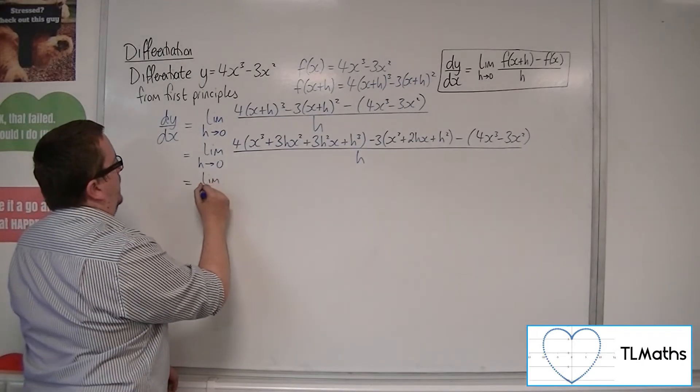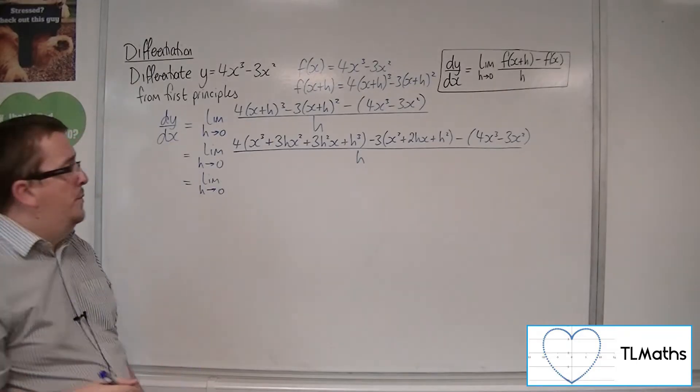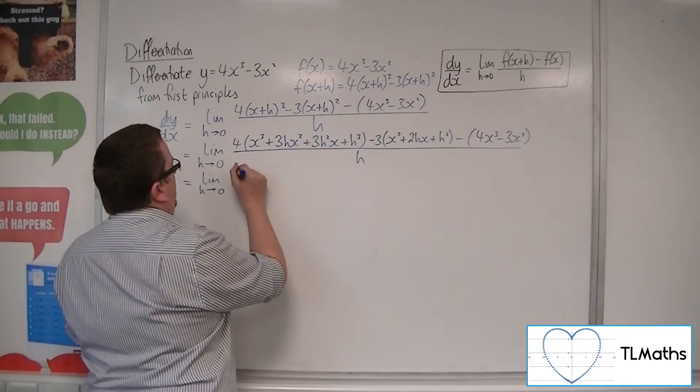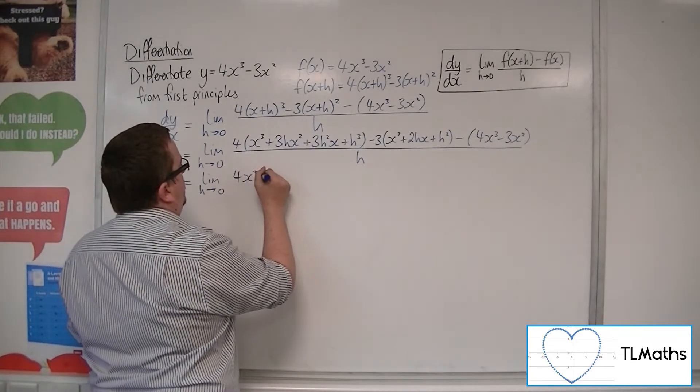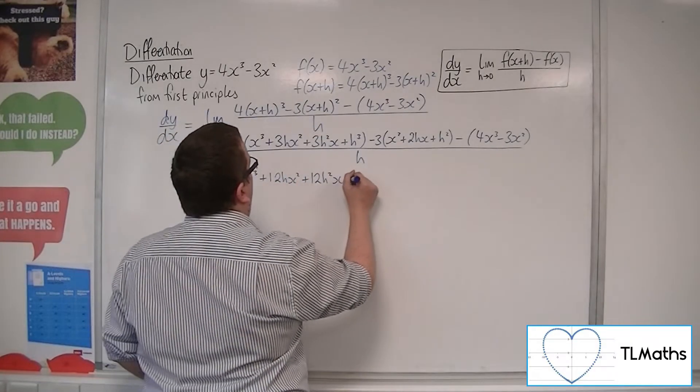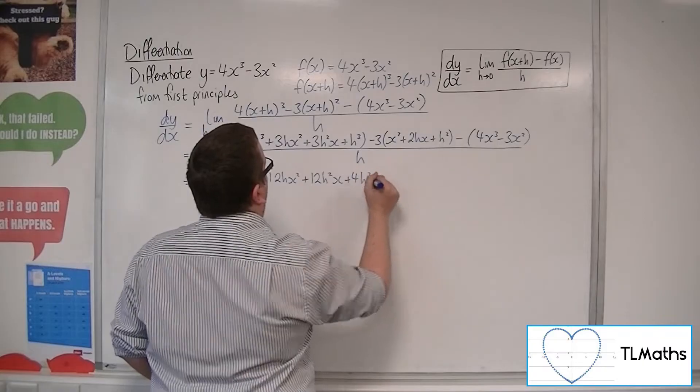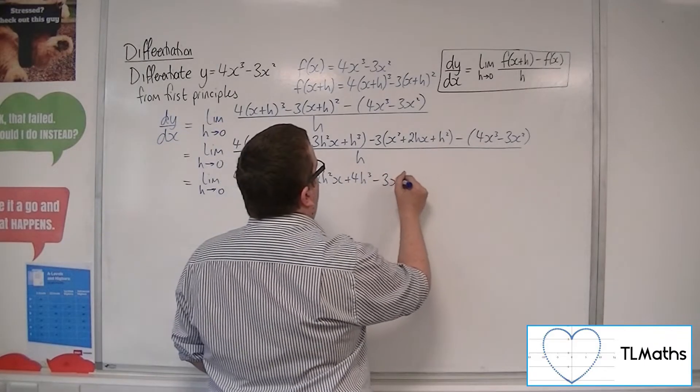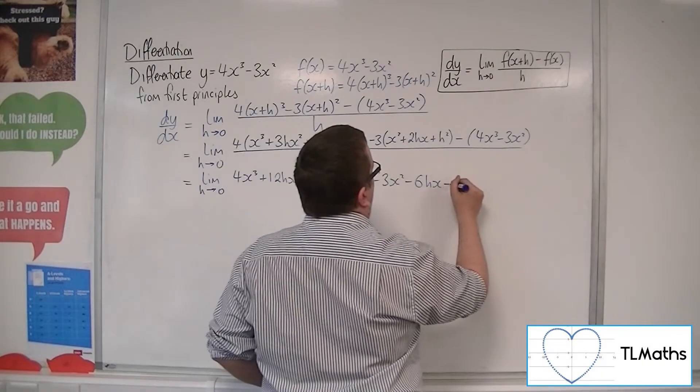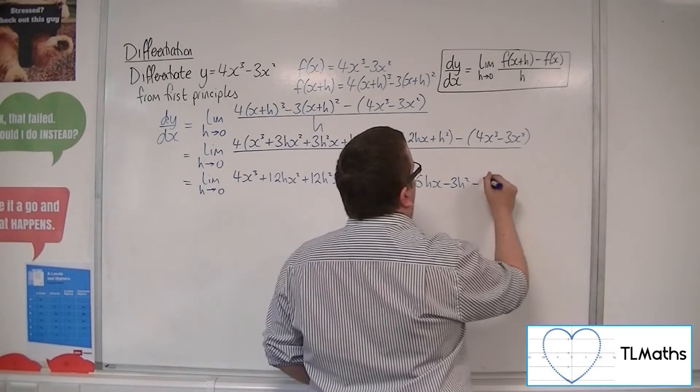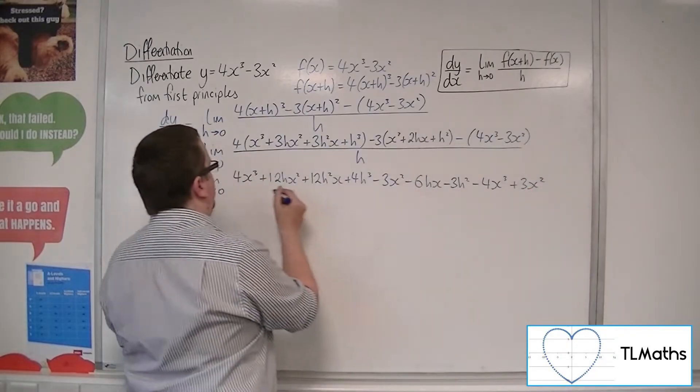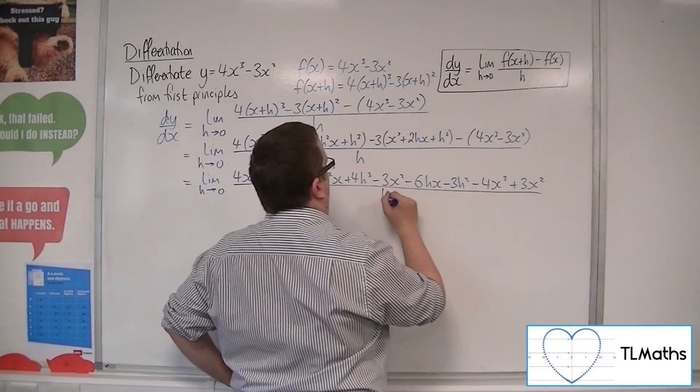Okay. So let's multiply through and see what we've got. So we've got 4x cubed plus 12hx squared plus 12h squared x plus 4h cubed, take away 3x squared, take away 6hx, take away 3h squared, take away 4x cubed plus 3x squared, all over h.